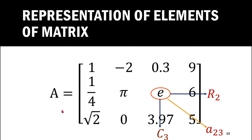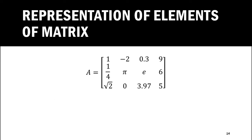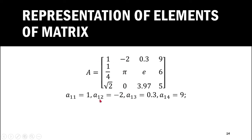We can denote the elements of matrix A as follows: A11 = 1, meaning the element in the first row and first column. A12 = −2, the element in the second row and first column. A13 = 0.3, the element in the first row and third column. A14 = 9. Similarly, A21 = 1/4, A22 = π, A23 = E, and A24 = 6.